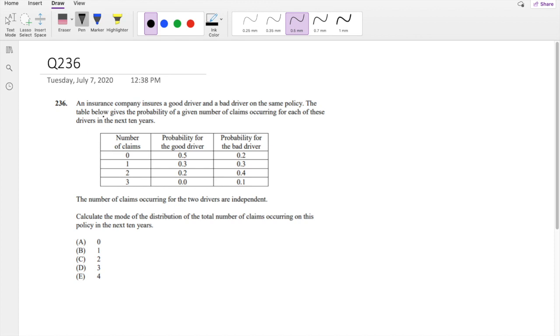An insurance company insures a good driver and a bad driver on the same policy. The table gives the probability of a given number of claims for each of these drivers in the next 10 years.